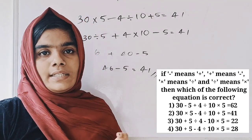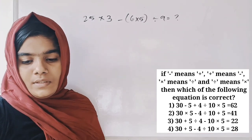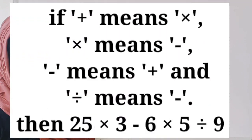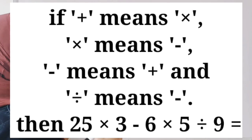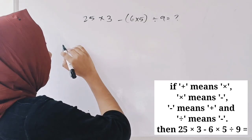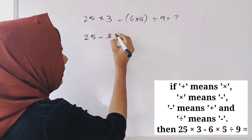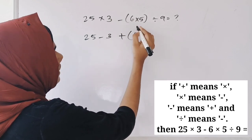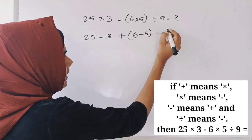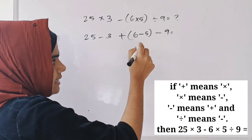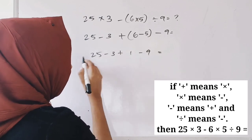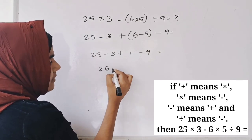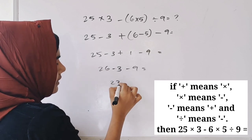Next question: if into means minus, minus means plus, and divided by means minus, then 25 into 3 minus 6 into 5 divided by 9 is equal to what? After substitution: 25 plus 1 is 26, minus 3, minus 9.